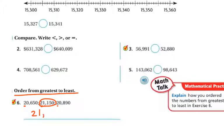So then my next number, I've already looked at these. So now I'm looking at the six and over here, I'm looking at the eight. Well, eight is bigger than six. So this next number is going to be bigger, 20,890. And then I would do my last number, 20,650.